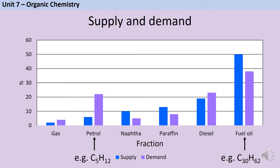This graph shows the approximate percentages of different fractions present in crude oil and also the approximate percentages of those fractions that we actually need. As you can see there is greater demand for petrol and diesel than what can be supplied from crude oil alone, while larger fractions like heavy fuel oil are more available than necessary, so we have a surplus.